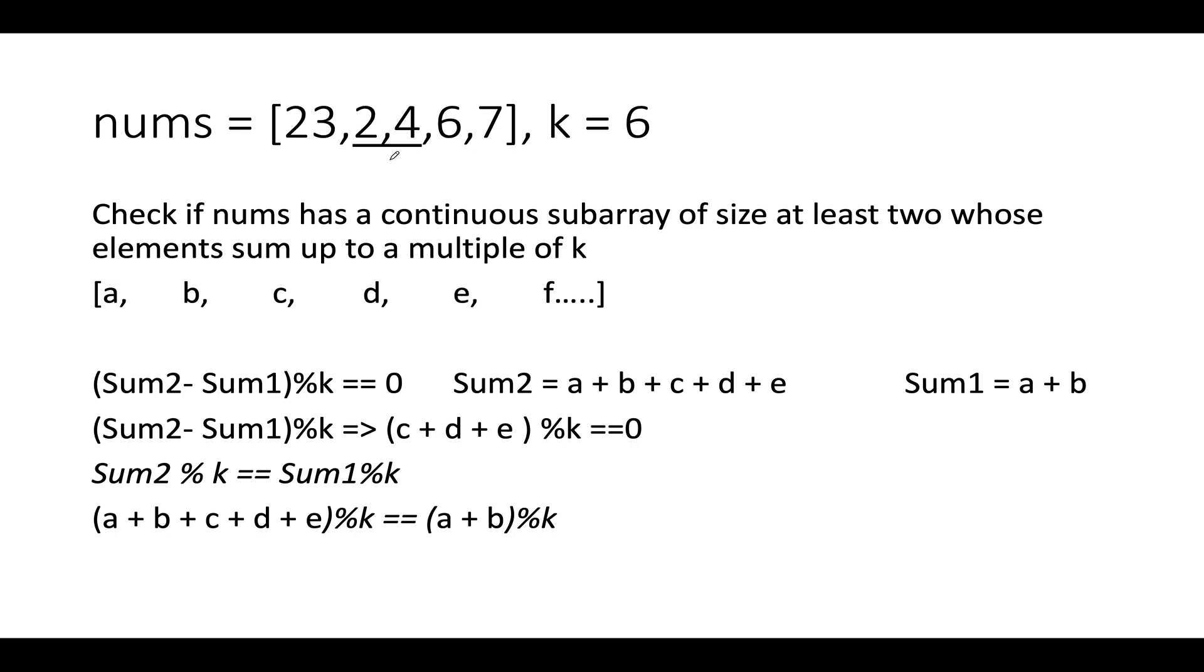The question says you are given an array of integers and an integer value k. You need to check whether there exists a contiguous subarray wherein the sum of the elements of this contiguous subarray gives you a multiple of k or not.